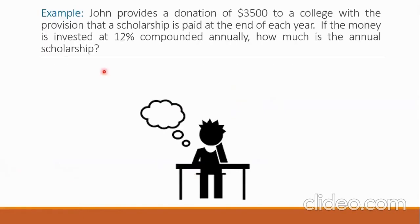Let us see this example. John provides a donation of $3,500 to a college with the provision that a scholarship is paid at the end of each year. If the money is invested at 12% compounded annually, how much is the annual scholarship?